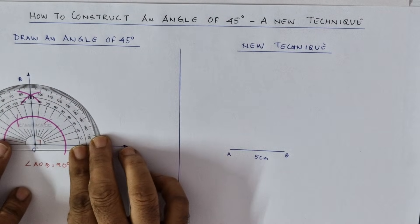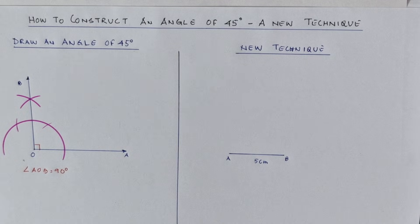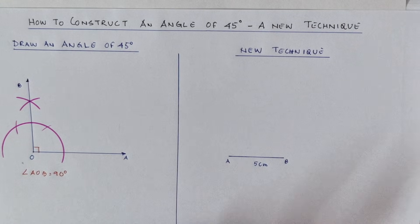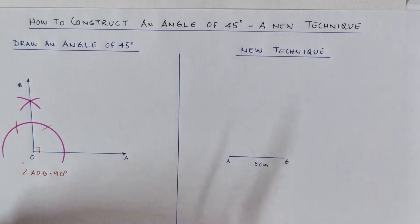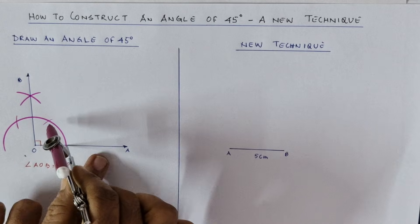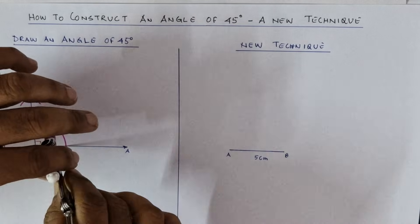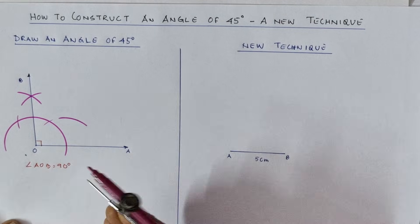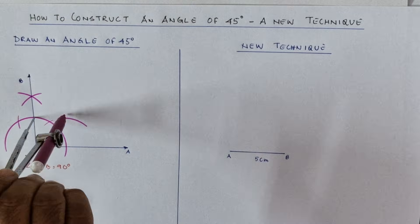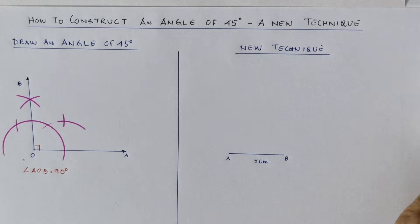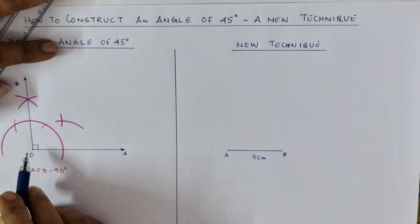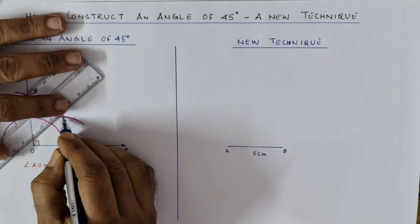Now we need 45 degrees, so we do an angle bisection of 90 degrees. If you divide 90 by 2 you get 45. Without changing the radius, point the needle to the first intersection where the main arc intersects OA and draw an arc. Then point to where the main arc intersects near the 90-degree ray and draw another arc. You have now bisected the 90-degree angle.